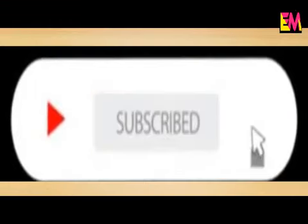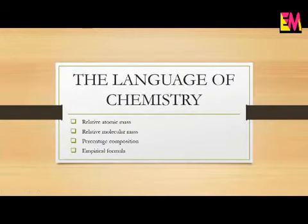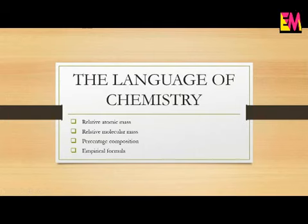Hello children, today we are moving to the last session of our chapter, the language of chemistry. The first term we are going to discuss here is relative atomic mass. You already know that atoms are the fundamental particles of all matter and they are extremely small in size. They cannot be seen or weighed directly under normal conditions, so we have to use some indirect methods to find out their atomic mass or atomic weight.